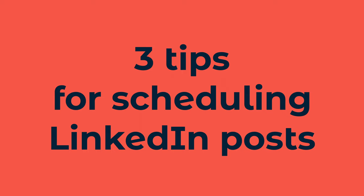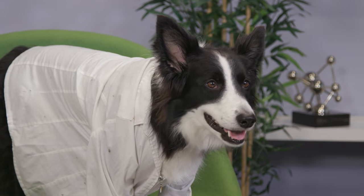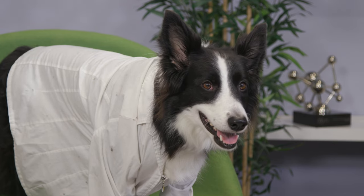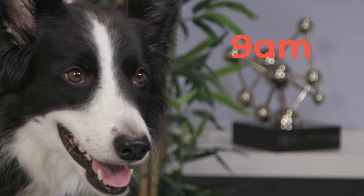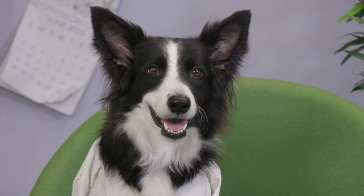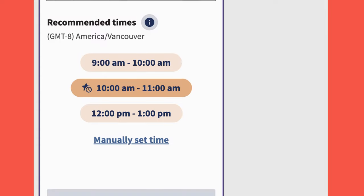Okay, now it's time for my top three tips on scheduling LinkedIn posts. Tip number one: optimize your publishing times. Our research shows that the best time to post on LinkedIn is 9 a.m. Tuesdays and Wednesdays. But every audience is unique and you should experiment with different times and see what works best. Hootsuite's Best Time to Post feature can help you find the time to schedule posts for your specific audience, to maximize engagement and traffic. You'll see recommendations right in your scheduler.